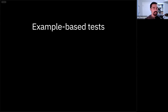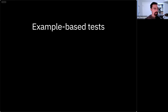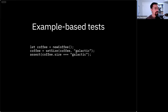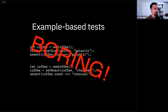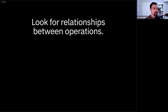We could test each of our operations in isolation — we could test the semantics of set size with example-based tests where we assert that after setting it to galactic it should be galactic, and after setting the roast to charcoal it should be charcoal. But frankly these are boring and they don't capture the interactions between the different operations. What we want is to look for those interactions — that's what the composition lens is all about.